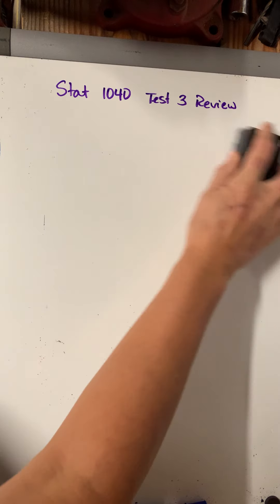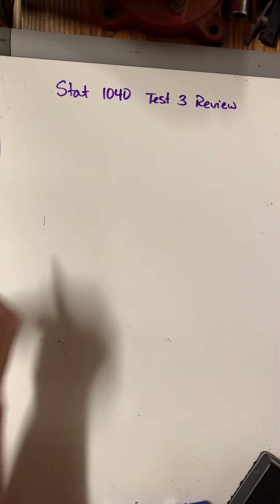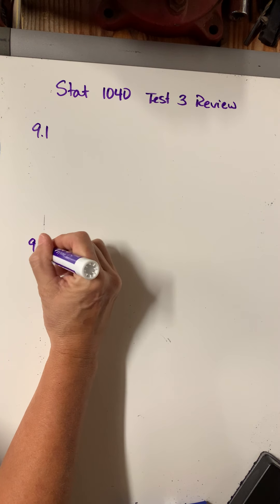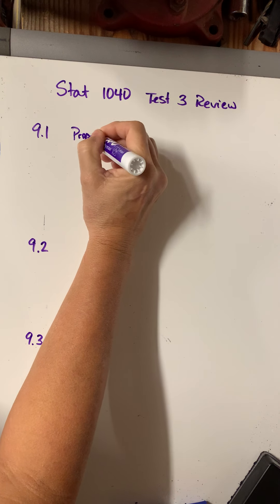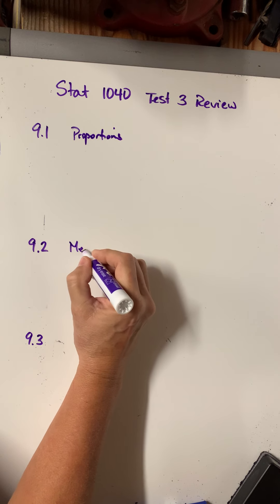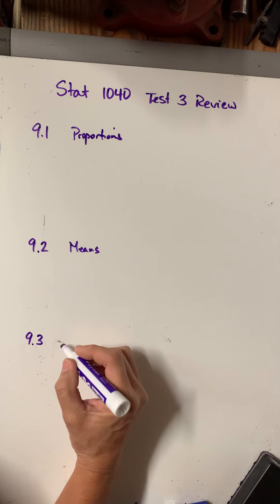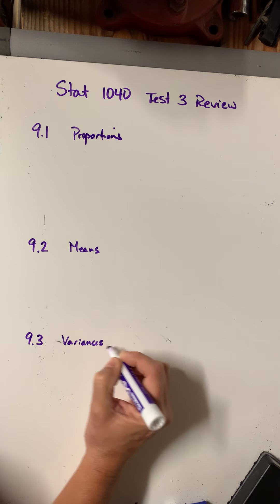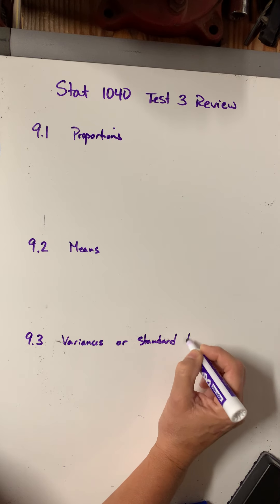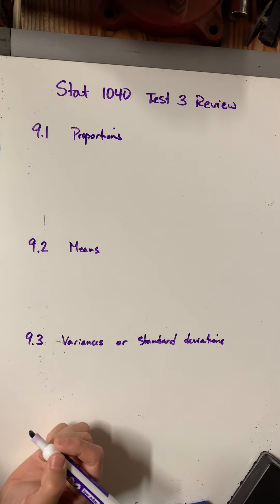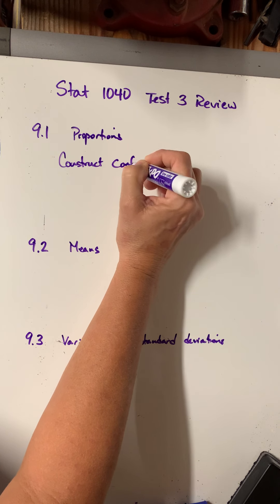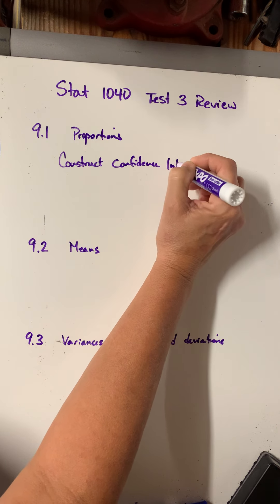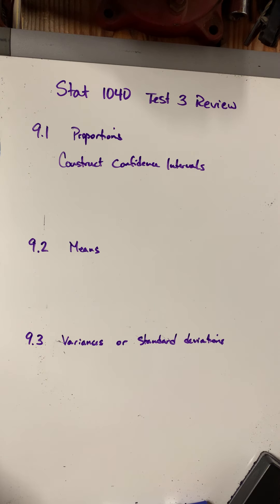In Chapter 9, we had sections 9-1, 9-2, and 9-3. I believe 9-1 was proportions, 9-2 was means, and 9-3 was either variances or standard deviations. What were they asking you to do in these problems? They were mostly asking you to construct confidence intervals. For the most part it was the same format — you just had to go to a different place in StatCrunch depending on the type.